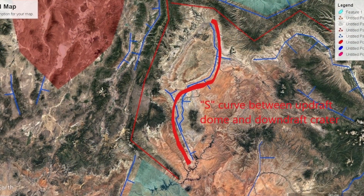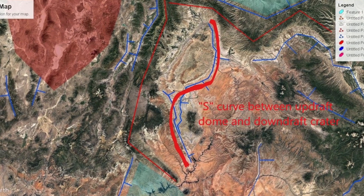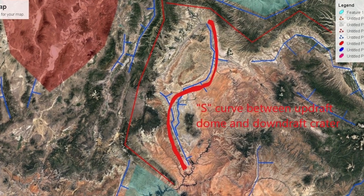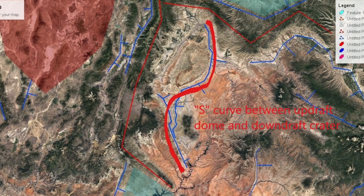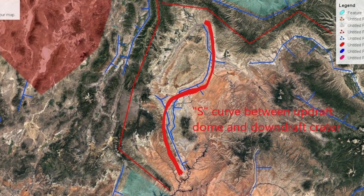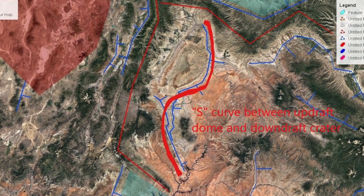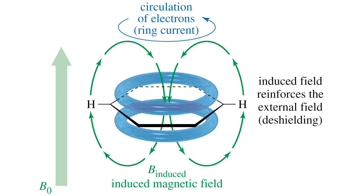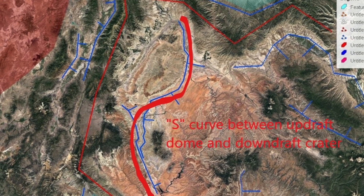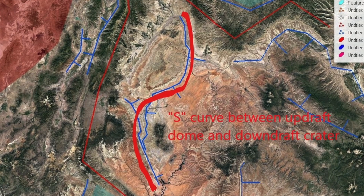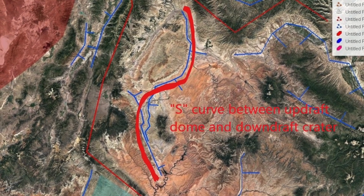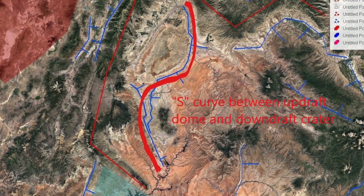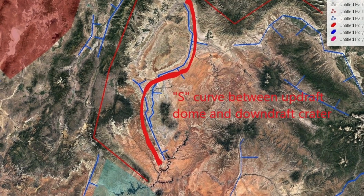The weather that produced these domes and craters essentially consisted of a thunderstorm producing updraft winds, paired with a cyclone producing a downdraft at its core. Electrically, it formed a ring current between them, with its lower half being currents in the ground. Its upper half consisted of the mesocyclone and cyclone connected by a jet stream wind from updraft to downdraft, forming an arch of condensate.